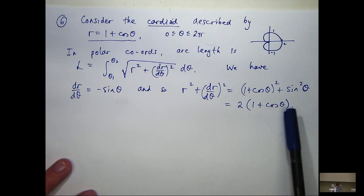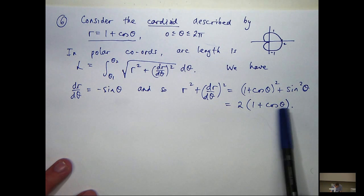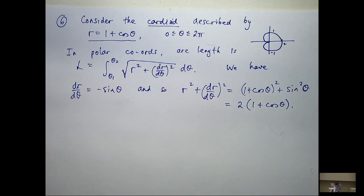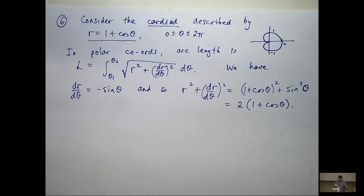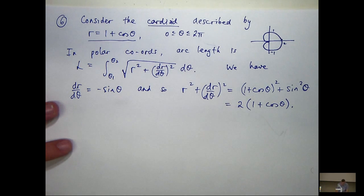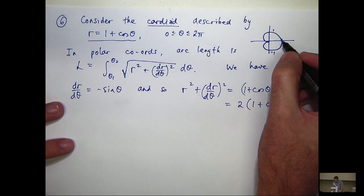Now this doesn't look like the square of anything yet, but can anyone suggest how we can make what's in these brackets a square? Yeah, double angle formula, excellent. It's a little bit different because we're going to go from θ to θ/2.